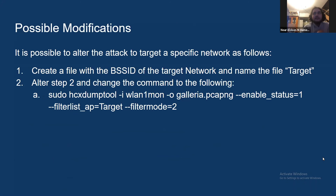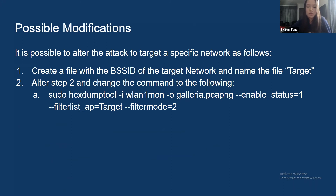There are possible modifications that can be made to this attack. One is to target a specific network — you can do this by first creating a file with the BSSID of the target network and naming that file 'target.' Then the command in step two of the attack can be changed accordingly.